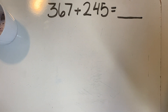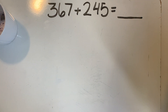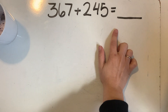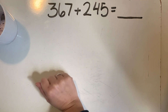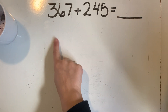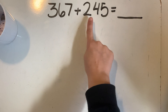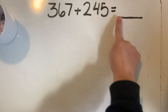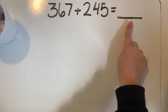Hi everyone! Today we're going to review how to add two three-digit numbers. We're going to be using this equation here today to help us review. This equation says 367 plus 245 equals something, and this is the answer that we're looking for.